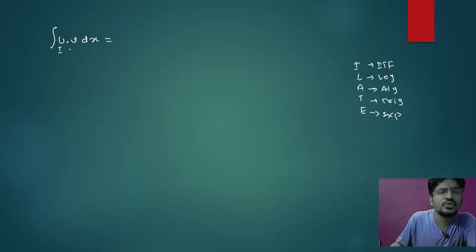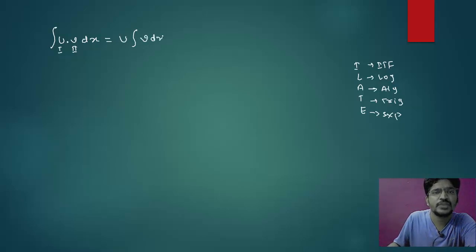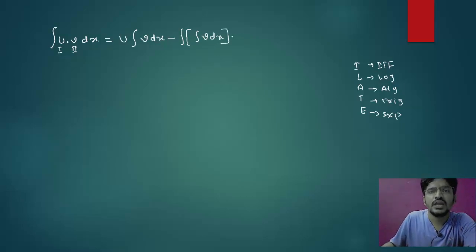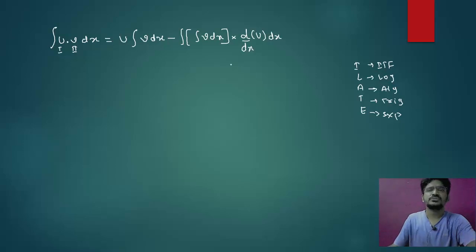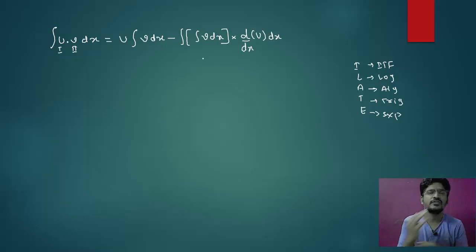According to IELATE, you choose the first function and second function. Let u be the first function and v be the second function. The integration by parts formula says: write the first function as it is, multiply with the integration of the second function with respect to dx, minus the integration of the bracket containing the integration of v times the differentiation of the first function.